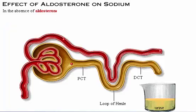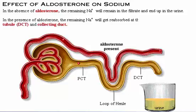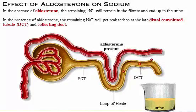In the absence of aldosterone, the remaining sodium will remain in the filtrate and end up in the urine. In the presence of aldosterone, the remaining sodium will get reabsorbed at the late distal convoluted tubule and collecting duct.